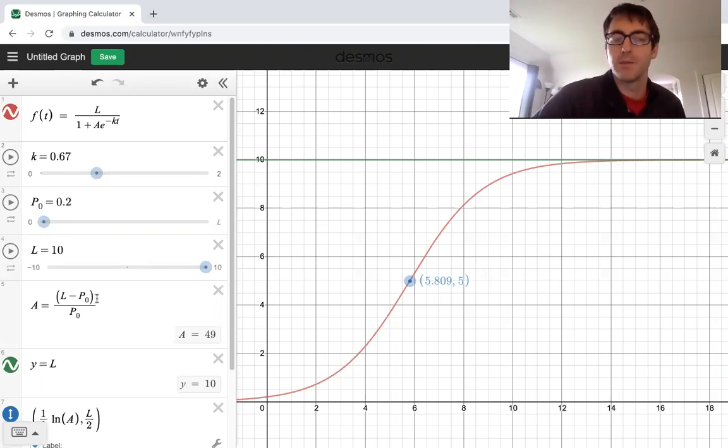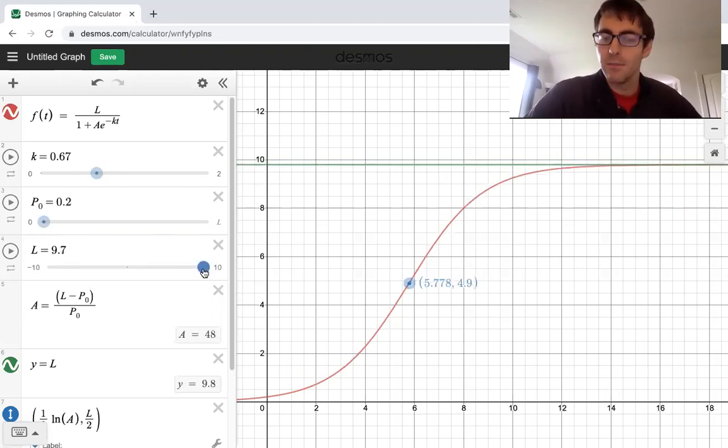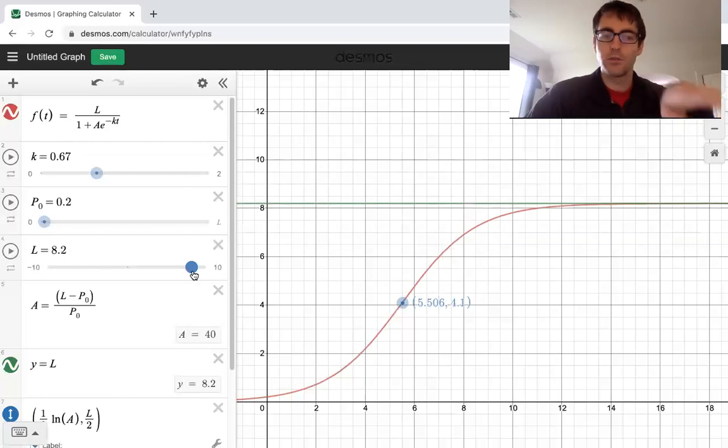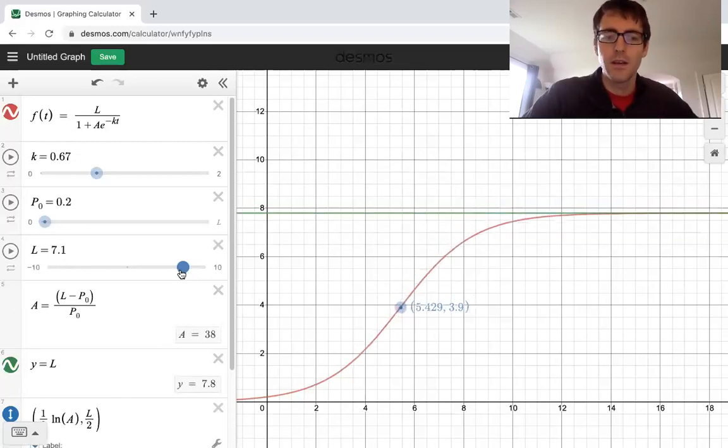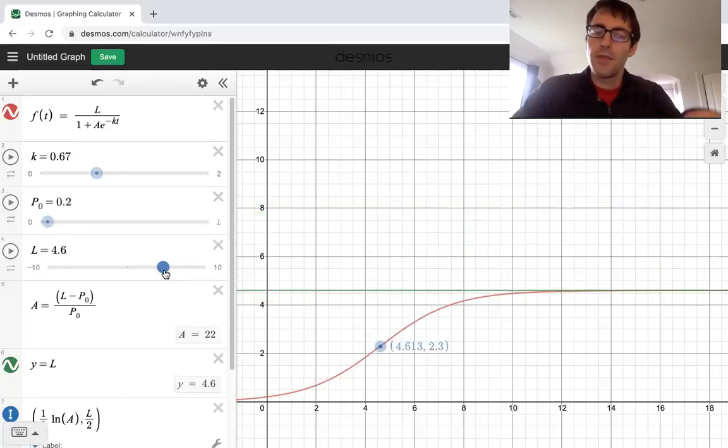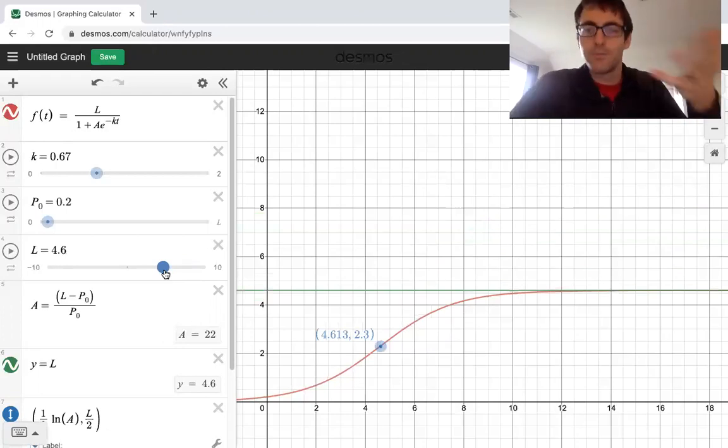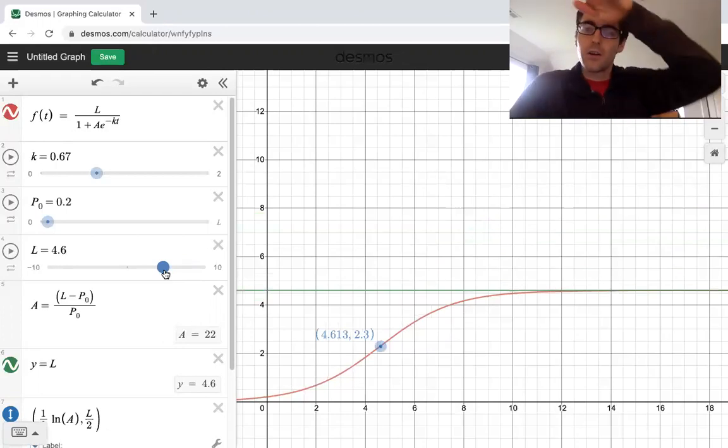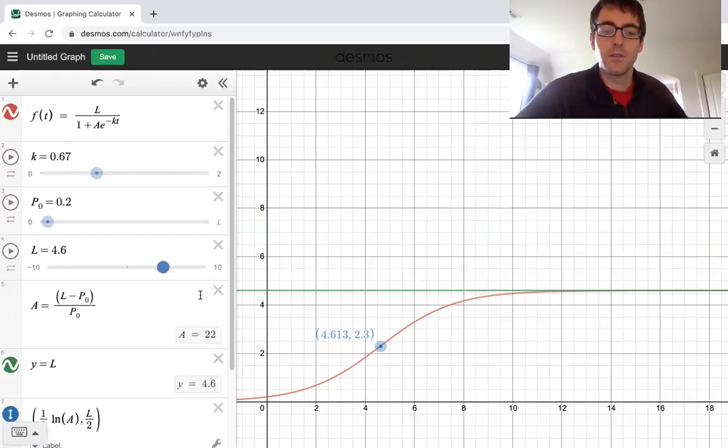So again, A has to do with P naught. And we can play around with what effect these constants have on what our function is doing. So if our limit is decreasing, so I've also drawn the limit in green. If our limit is decreasing, then naturally the whole curve is going to be a little bit flatter. It's going to level off at something just before what that limit is.